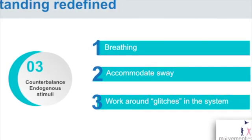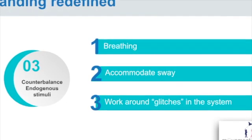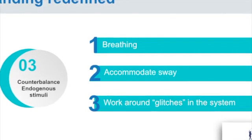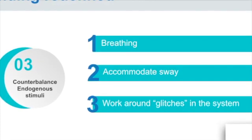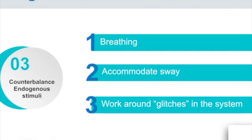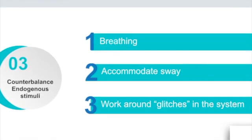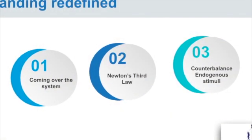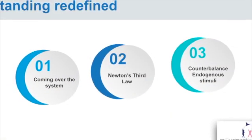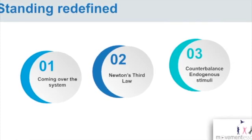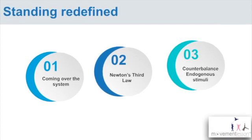We have to counterbalance breathing and other endogenous inputs, and accommodate the sway we have just by nature. If I'm swaying one way, my body has to bring me back, because if I go the same direction, I'll fall over. All the time we're counterbalancing those things. Everybody has some little glitch in their system — some spot that doesn't rotate as well as it should, or maybe you're walking through a conference with a 25-pound bag and have 20 pounds on one side that you have to counterbalance just to stand. You have things to work around all the time — Newton's third law, counterbalancing endogenous stimuli, and sometimes external stimuli as well.